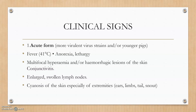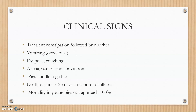Clinical signs can be described in three or four forms. In the acute form: fever, anorexia, lethargy, enlarged swollen lymph nodes due to thrombocytopenia, cyanosis of the skin especially of the extremities and ears. Transient constipation followed by diarrhea, vomiting, and dyspnea are also seen.